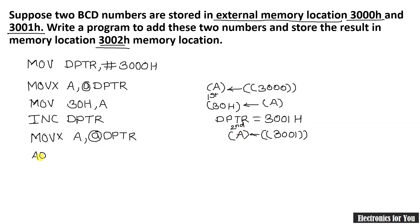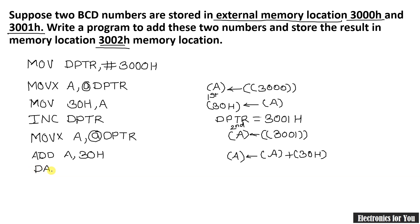We now have the first number in memory location 30h and the second number in the accumulator. We use ADD A, 30h — assuming no carry — to add them together; the result is stored in the accumulator in hexadecimal. We then apply the DAA instruction — Decimal Adjust Accumulator — to convert the result into a BCD result.